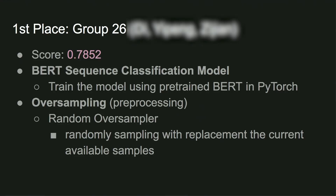First place goes to Group 26 — congratulations. They got a score of 0.7852. What they did was use a combination of BERT sequence classification model with oversampling. They used transfer learning with a pre-trained BERT end-to-end sequence classification model, trained on our training dataset and tested on the evaluation set. To account for data imbalance, they used oversampling — specifically the random oversampler — randomly sampling with replacement to balance out the label distribution.